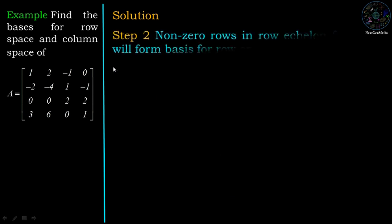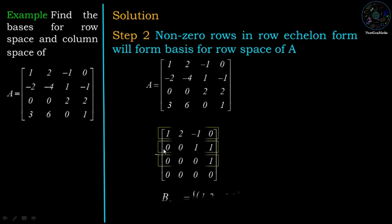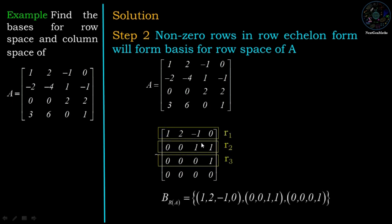Now in step 2, the non-zero rows in row echelon form will form a basis for the row space of A. We identify the non-zero rows in the row echelon form of matrix A. The first three rows — R1, R2, R3 — in row echelon form will form a basis for the row space of A.